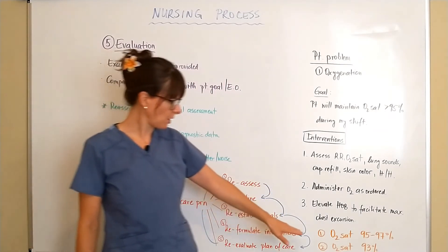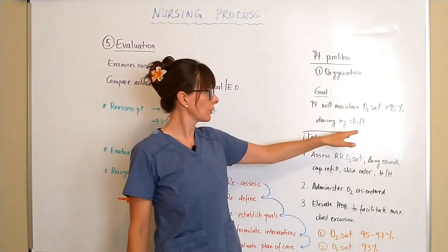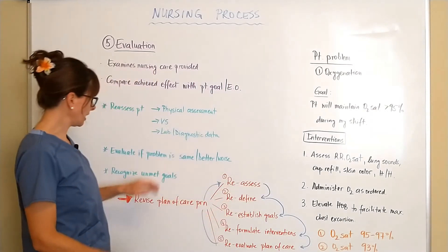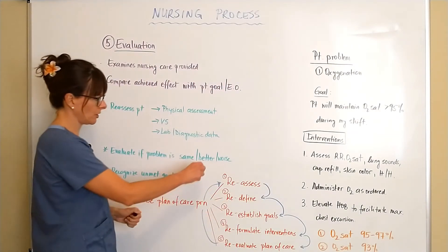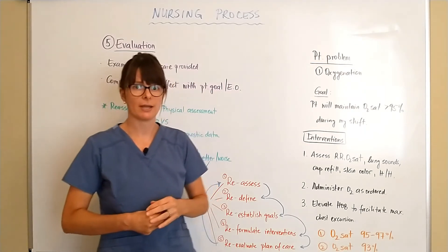Now for the evaluation if our O2 sat is between 95 and 97 percent during our shift then we have met our goal and we come back here and we say the patient is better, check that off and move on to the next problem that we have identified.